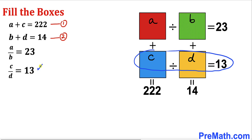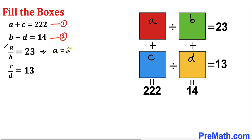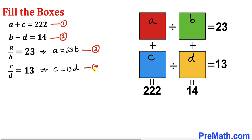Likewise, looking at the two bottom horizontal boxes, we get C divided by D equals 13. Now we are going to cross-multiply. This equation gives us A equals 23 times B, and likewise this equation gives us C equals 13 times D. Let me call these equation number three and equation number four.